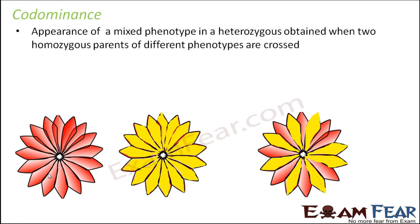Co-dominance is the appearance of a mixed phenotype. Please understand the difference between an intermediate phenotype and a mixed phenotype. In a mixed phenotype, the dominant trait gets expressed and the recessive trait also gets expressed — both traits are expressed. This occurs in a heterozygous individual obtained when two homozygous parents of different phenotypes are crossed.